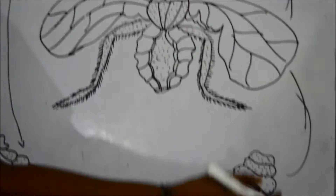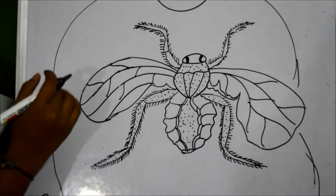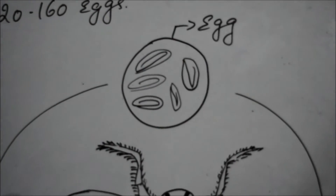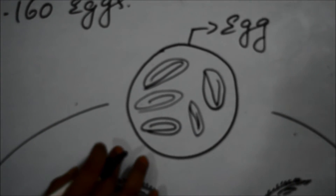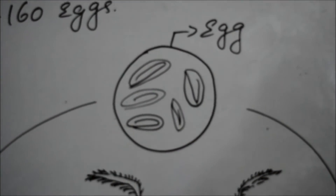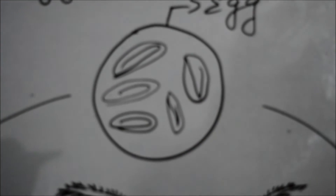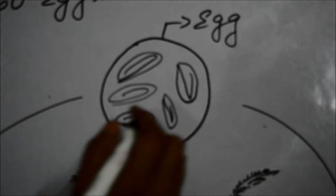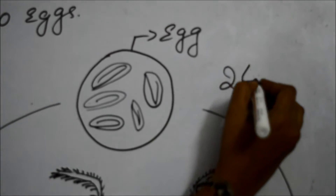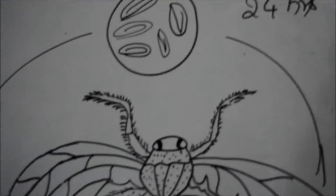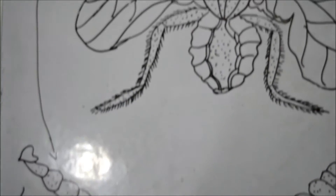Now let us see the first stage — the egg. The egg is white and cylindrical. It has two ripple-like longitudinal ridges which you may observe. The eggs hatch within 24 hours to form a larva.